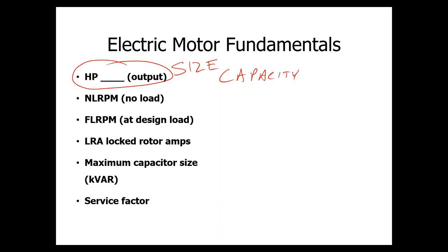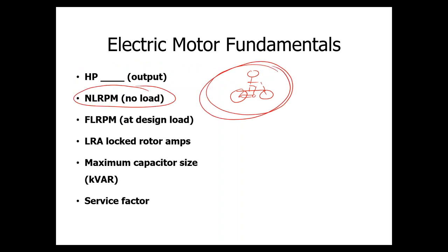The next concept is the no load RPM. Sometimes I like to do this with an analogy of a bicycle. If you can imagine you're riding your bicycle on flat ground, there would be a point where you cannot rotate your legs any faster. You're just going as fast as you can on flat ground. That would be analogous to a motor running at no load.